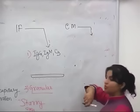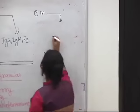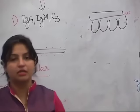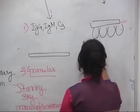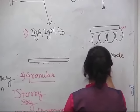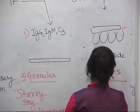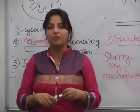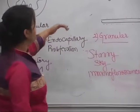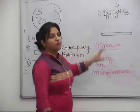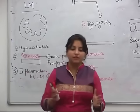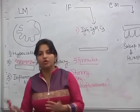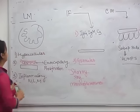On electron microscopy of PSGN, in the later stages the deposits are present on the sub-epithelial side. They are very bulky and large deposits, known as humps. In early stages, the deposits can also be seen in the sub-endothelial location. Since this is an infective etiology, most children will recover with time. Very few progress to rapidly progressive glomerulonephritis or chronic glomerulonephritis, so the prognosis is very good in PSGN.